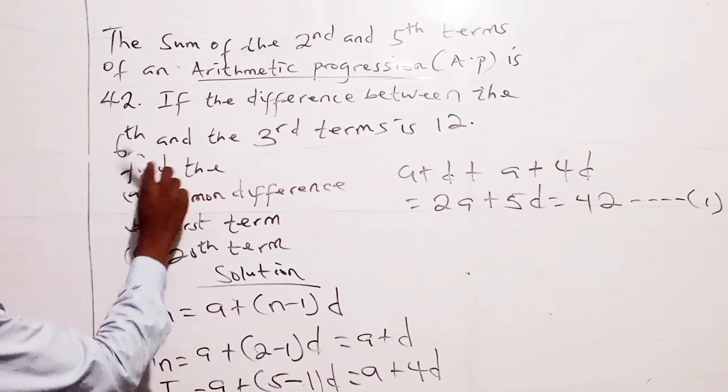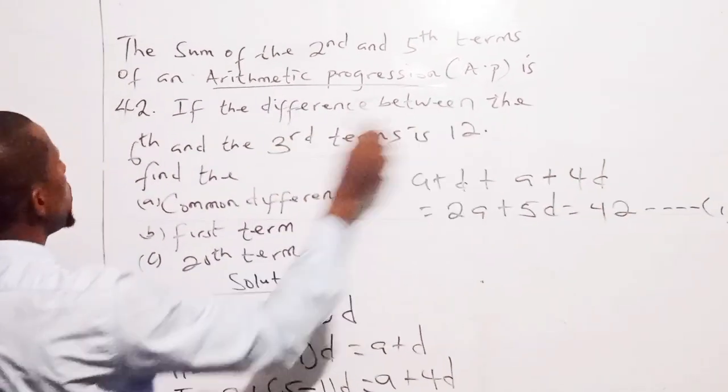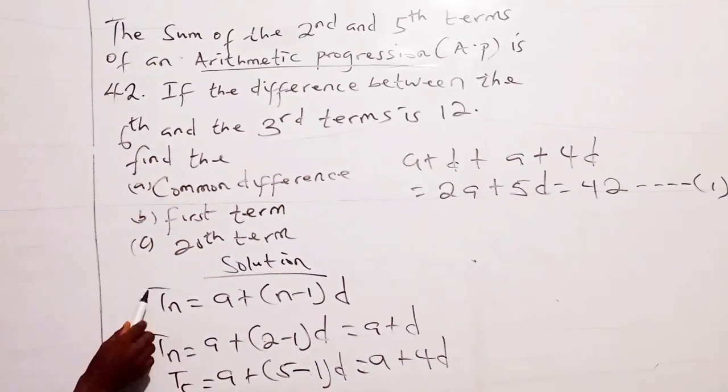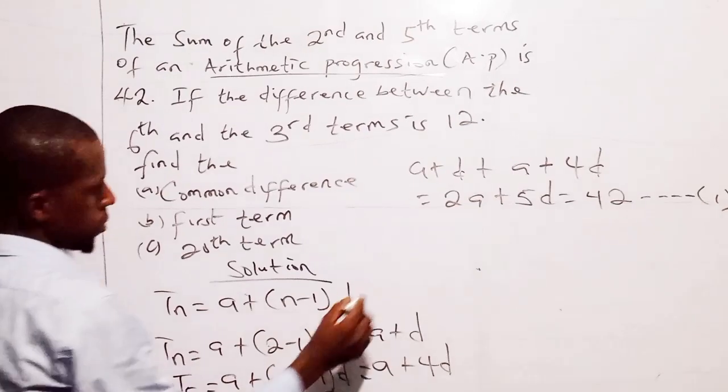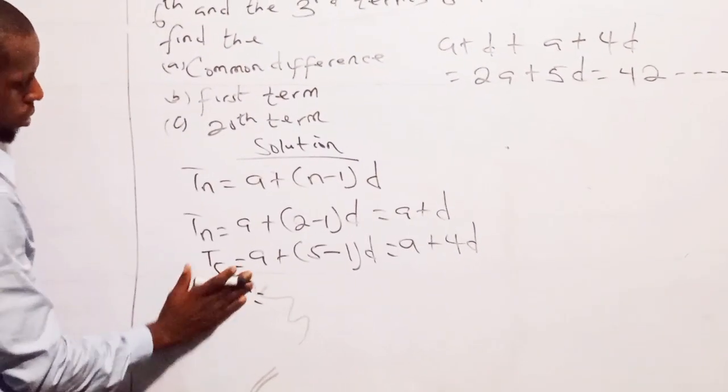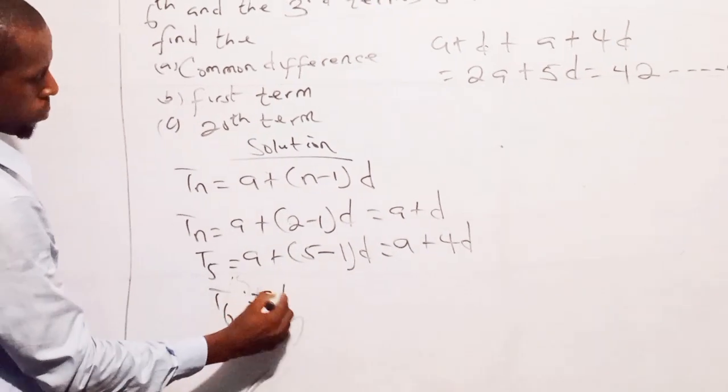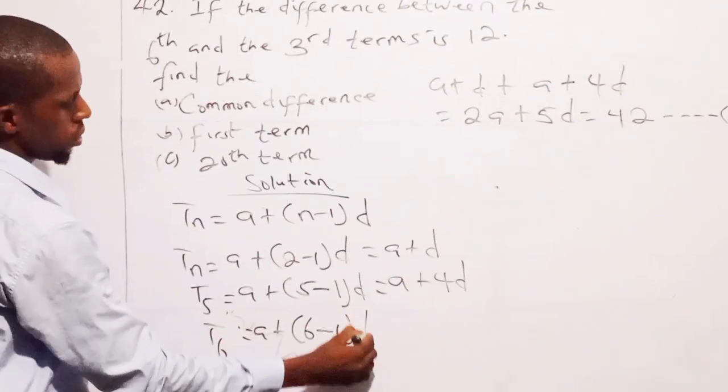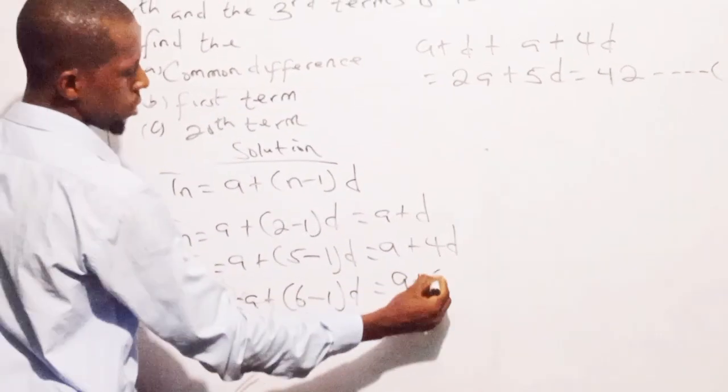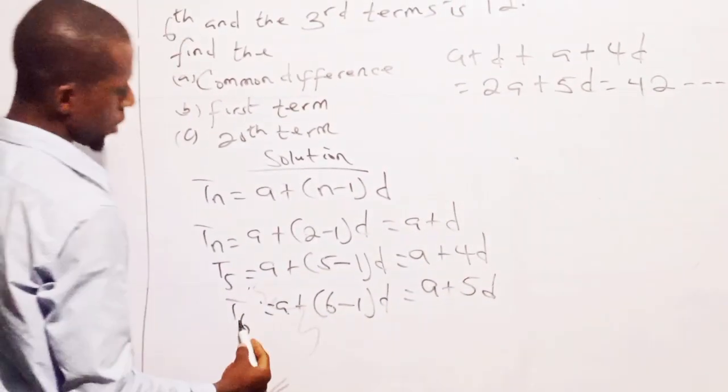Now, if the difference between the sixth term and the third term is 12, so let's look for the sixth term. So for the sixth term, I say this is T6 equals to A plus 6 minus 1, D. So that gives me A plus 6 minus 1 is 5 times D, that is 5D. So this is the sixth term.